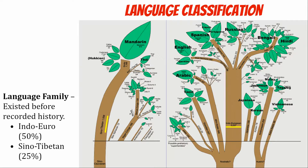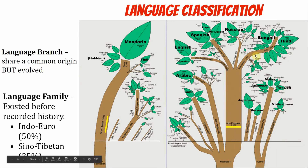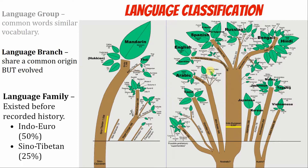These languages share many commonalities. The next classification level is the branch — languages that share a common origin but have evolved and diverged, developing different vocabularies. We call related words 'cognates' — they sound similar. Finally, you have the group, represented as the leaves on the tree. Looking at a proportional representation, the largest group is Mandarin — more people speak Mandarin Chinese than any other language in the world.